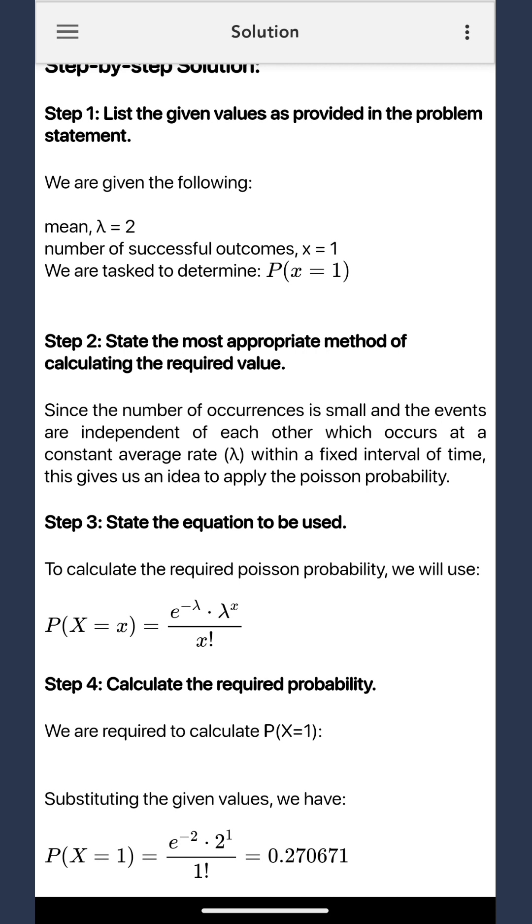Lastly, we calculate the required probability as shown. And here it is. The probability of exactly one student approaching the librarian in the next 15 minutes is equal to 0.270671.